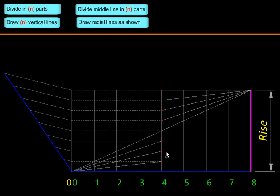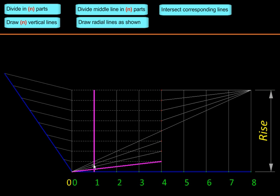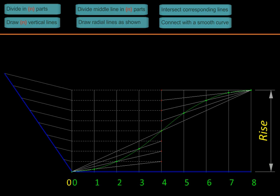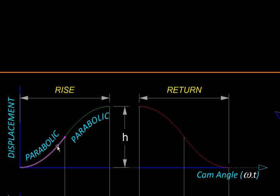Then we are going to take corresponding intersections. Say the first radial line and the first vertical line, I'll take the intersection of that, then the intersection of second radial line and second vertical line, the third radial line with third vertical line, and so on. So let us plot these points of intersection and then join them with a smooth curve.